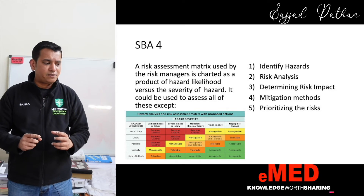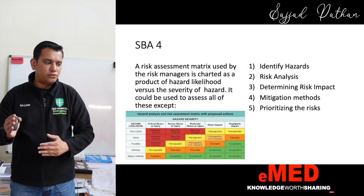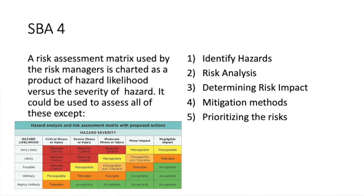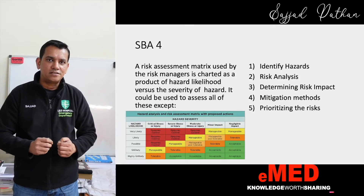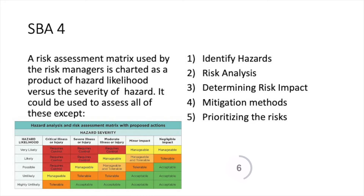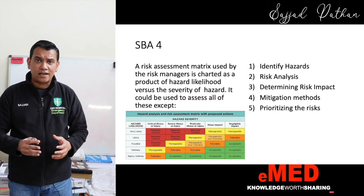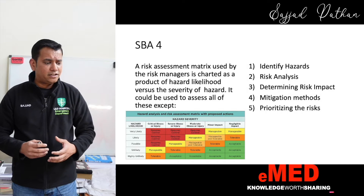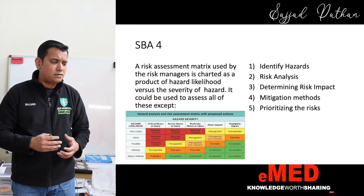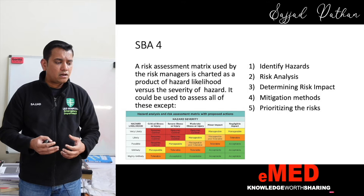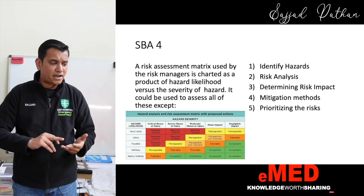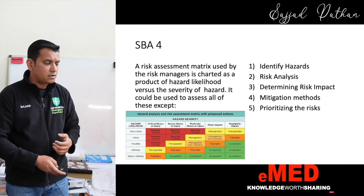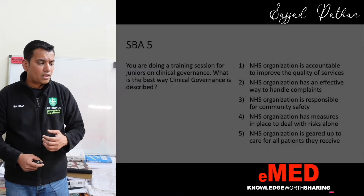Question number four: a risk assessment matrix used by risk managers is charted as a product of likelihood ratios versus the severity of hazard. What could it be used to assess — except one option? The matrix can identify hazards, perform risk analysis, determine risk impact, and prioritize risks. However, it does not tell you the mitigation methods — that is, what actions you will take. So the answer is mitigation methods.